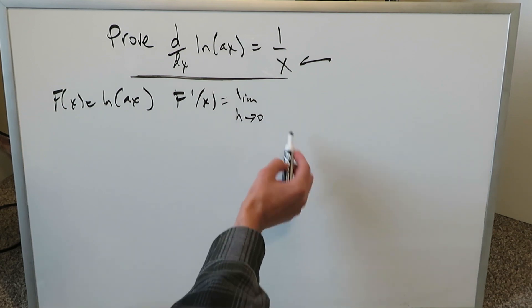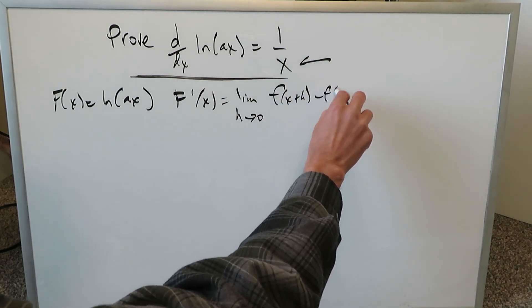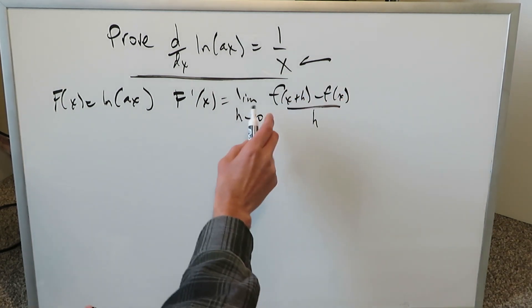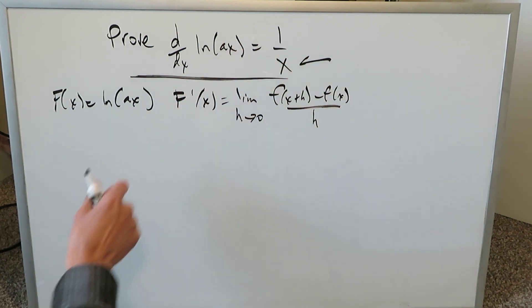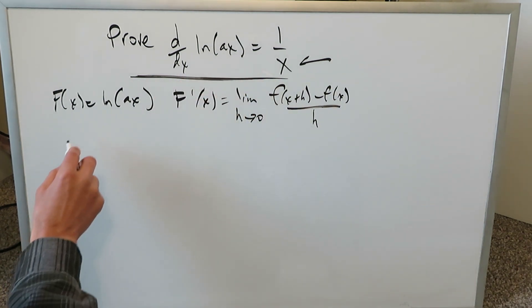Limit as h approaches 0, you have f of x plus h minus f of x all over h. We have to use this to prove that. And you know this right here is our basic function here in terms of what we're doing the derivative of.